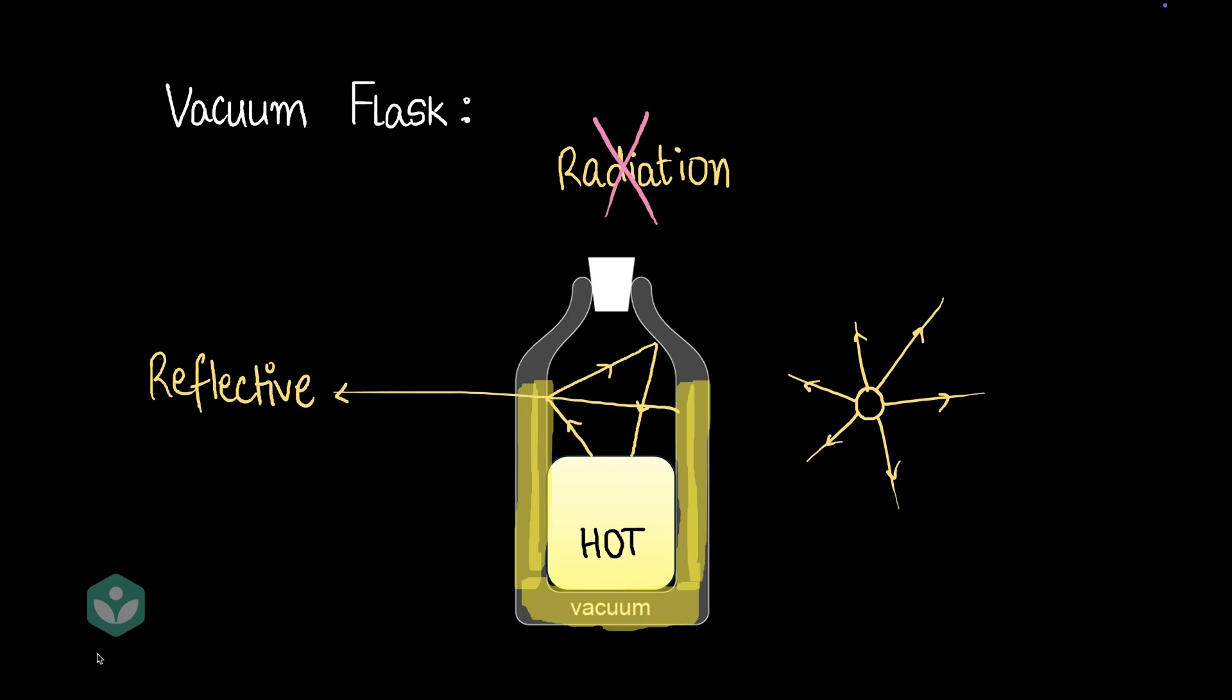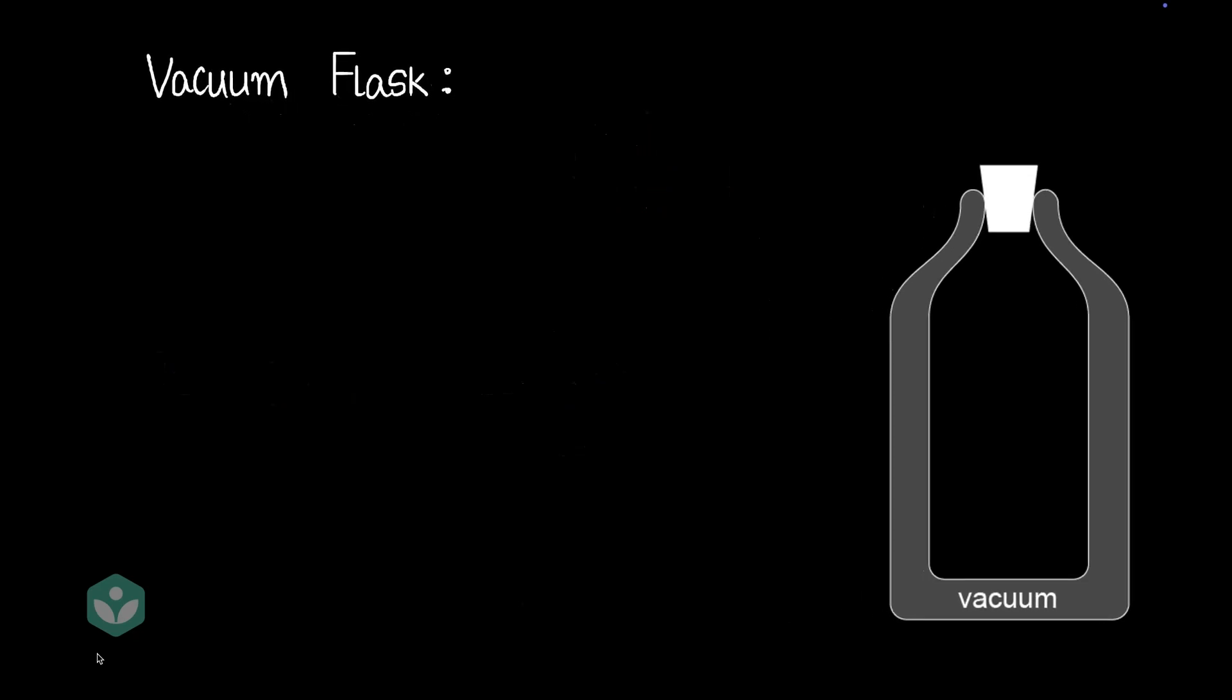Now, let's apply these principles of stopping convection, conduction, and radiation in our home construction. What if we made a home that's just like the flask, right? That would help.